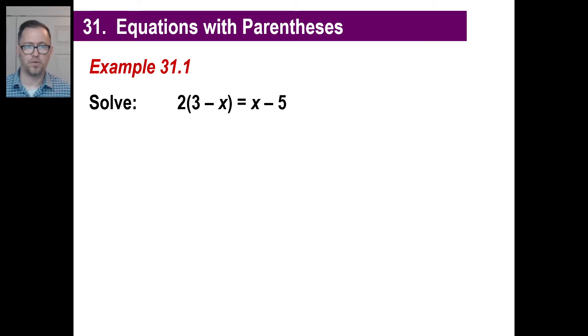So let's go ahead and do that. We know how to distribute the two. If you distribute the two here, you get first, of course, a six. Then you get two times a negative x gives you negative two x, and that's going to equal x minus five, and now we're at a point where that looks familiar, right?